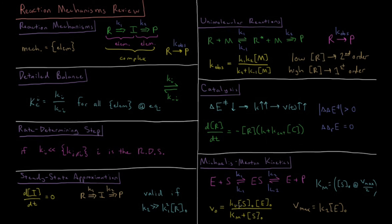What we calculate is a rate law where the reaction rate is equal to K2, this second rate constant, times the initial concentration of substrate times the initial concentration of enzyme, divided by the Michaelis constant plus the initial concentration of the substrate. The Michaelis constant is equal to the concentration of the substrate when the reaction is occurring at half of its maximum speed.